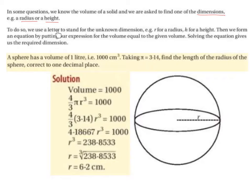To do so, we use a letter to stand for the unknown dimension, for example r for radius or h for height. Then we form an equation by putting our expression for the volume equal to the given volume. So basically we let the formula equal the volume and fill in the pieces of information that we do know. Solving the equation gives the required dimension.